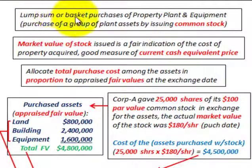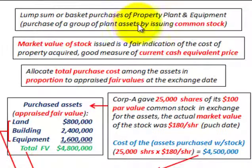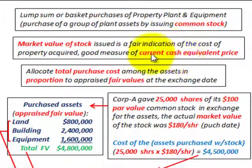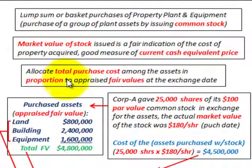What we're going to be looking at here is a lump sum or basket purchase of some property, plant, and equipment. We're going to purchase a group of plant assets by issuing common stock. The market value of the stock issued is a fair indication of the cost of property acquired — it's a good measure of the current cash equivalent price. We have to allocate the total purchase cost among the assets in proportion to the appraised fair values at the exchange date.